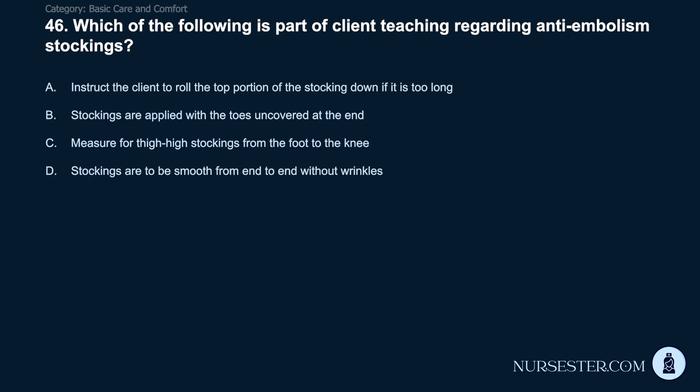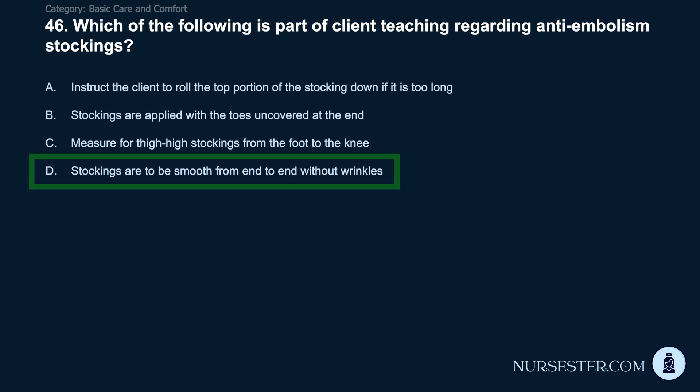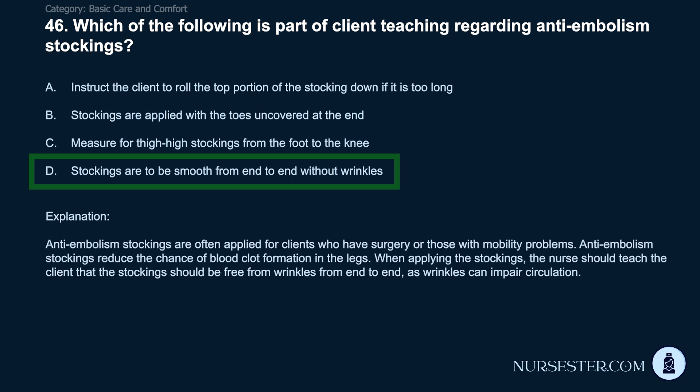Question 46: Which is part of client teaching regarding anti-embolism stockings? A) Instruct the client to roll the top down if too long. B) Stockings are applied with toes uncovered. C) Measure for thigh-high stockings from foot to knee. D) Stockings should be smooth from end to end without wrinkles. Correct answer: D. Stockings should be smooth without wrinkles. Anti-embolism stockings reduce blood clot formation in the legs. The nurse should teach the client that stockings must be free from wrinkles, as wrinkles can impair circulation.